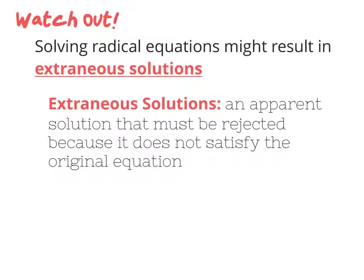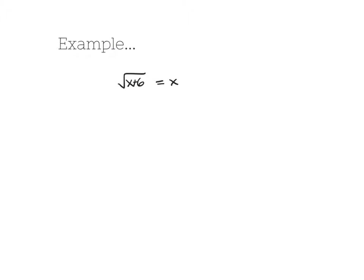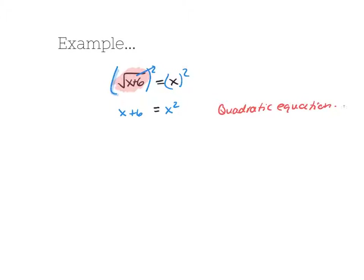In other words, we're going to do all our math correctly and solve the equation, but when we plug the answer back in at the end, it won't make the original equation true. That's why we always check our answers — in these types of equations we might get an answer that's not actually a solution, and we'd need to cross it out. In this example there's only one square root, and it's already isolated. So we square both sides: on the left the square root and square undo each other, giving x plus 6; on the right we get x squared. Now we have a quadratic equation.